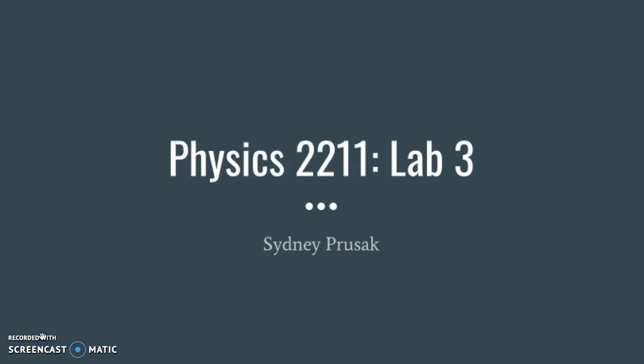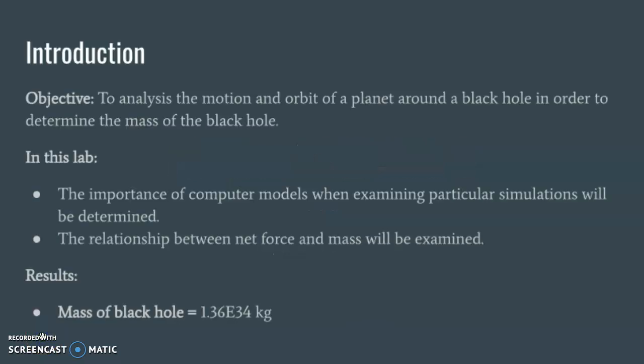This is my presentation for Lab 3 from Physics 2211. The goal of this experiment was to analyze the motion and orbit of a planet around a black hole. From this data, the mass of the black hole was determined. In this lab, the importance of computer models when examining particular simulations was determined, and the relationship between net force and mass was examined. Overall, the final results displayed that the mass of the black hole was equal to 1.36 times 10 to the 34th kilograms.